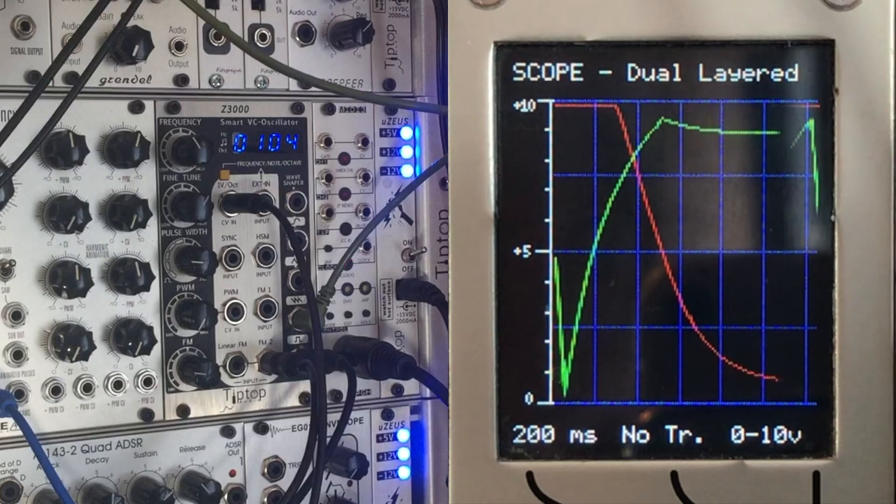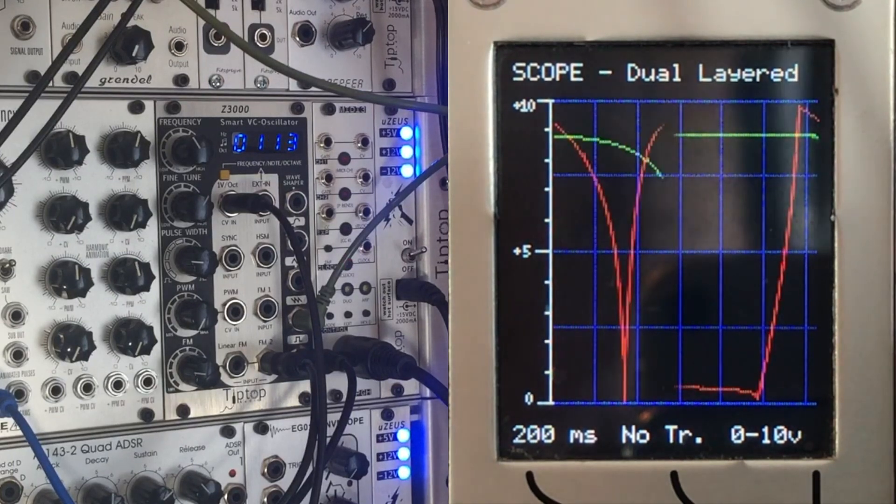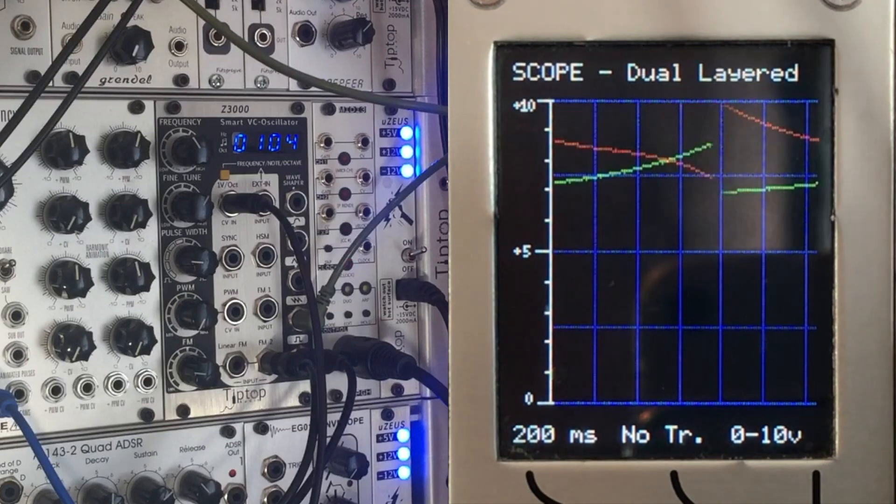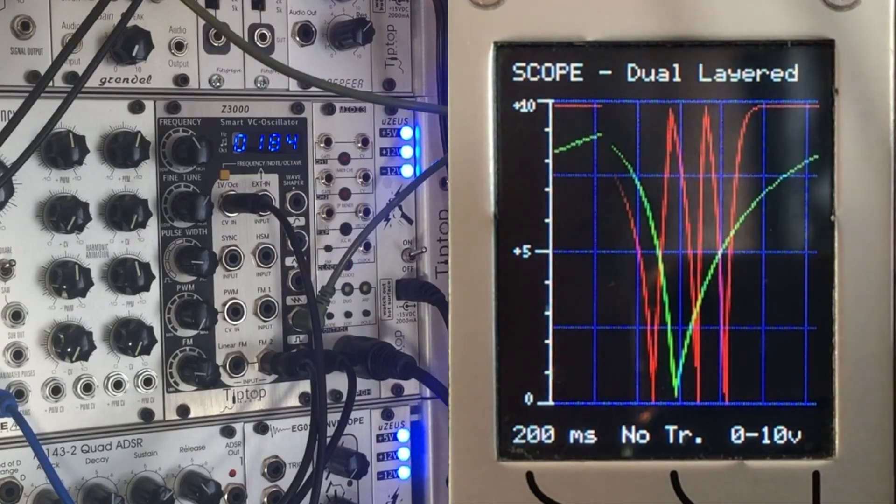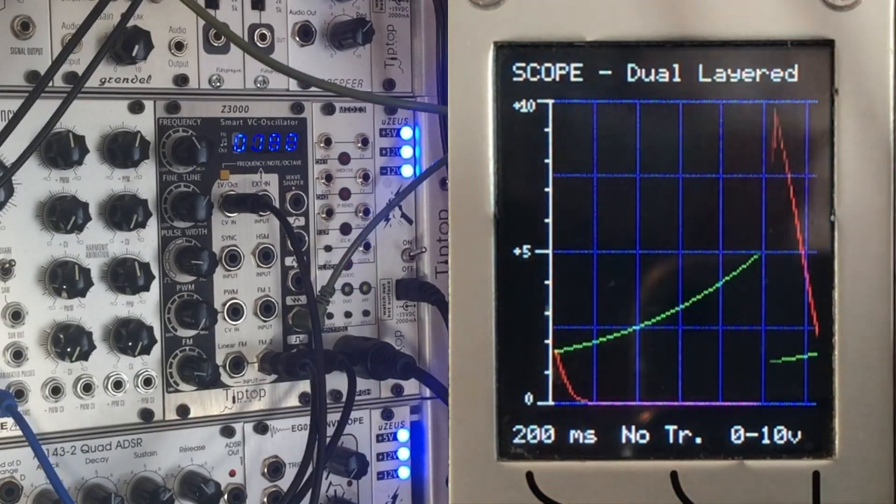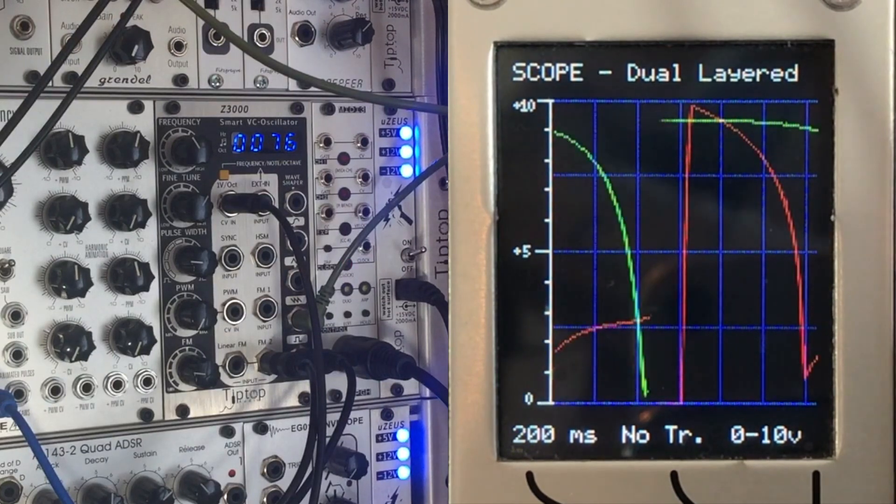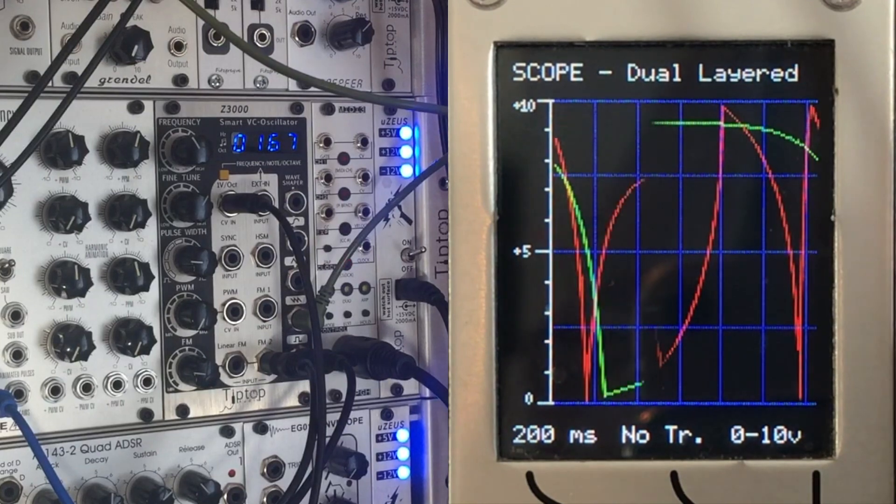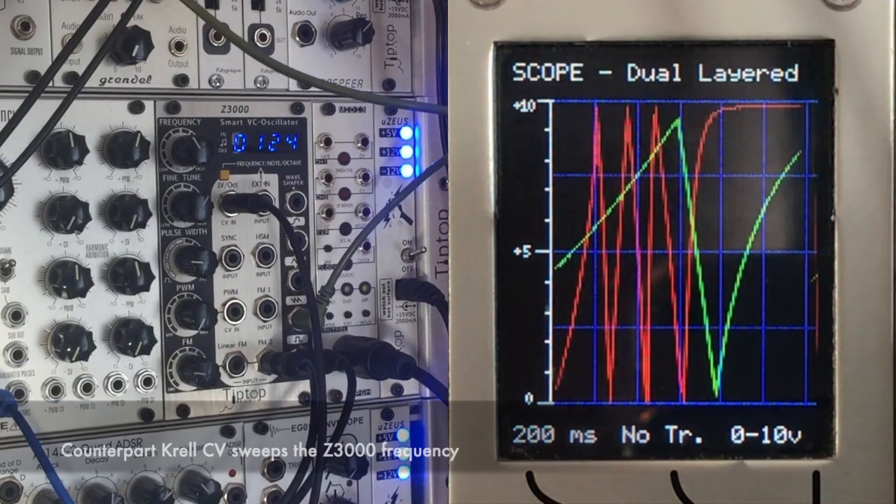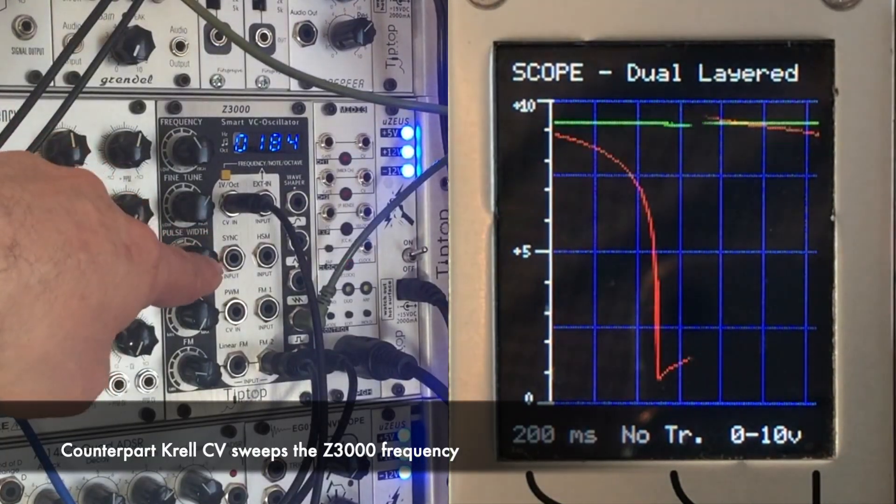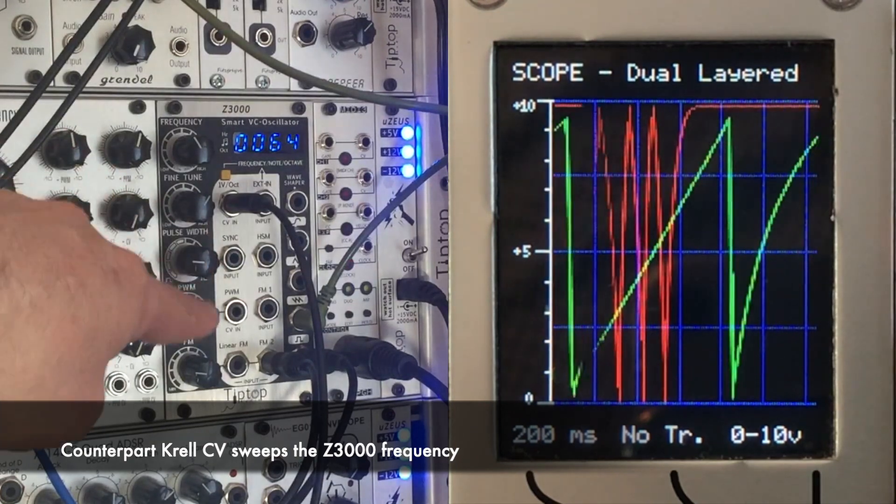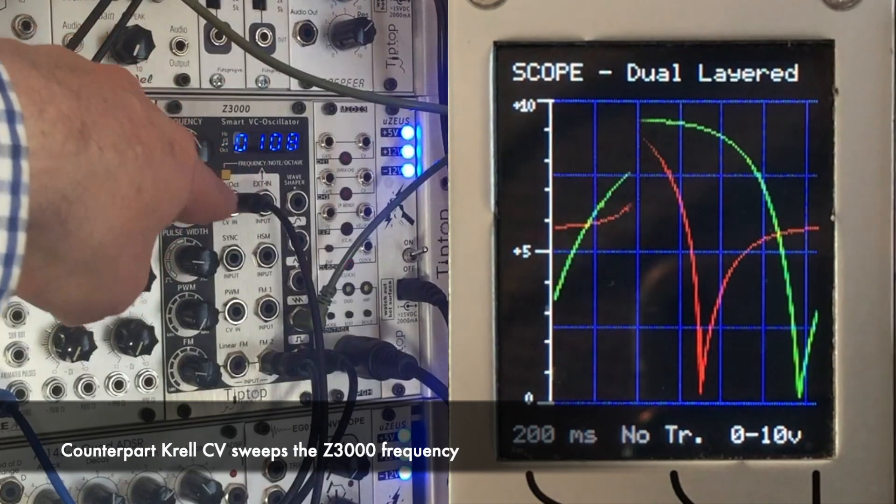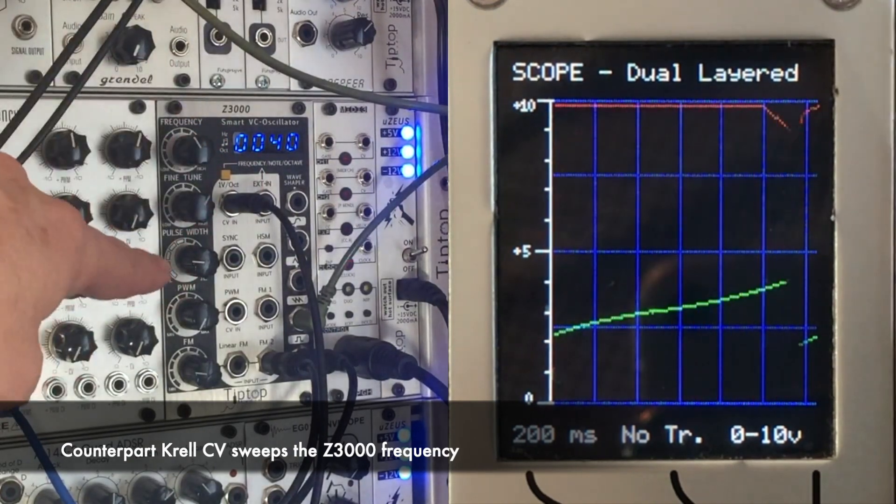Now I just wanted to go over quickly how I've created this kind of unique sounding voice. What I'm doing is I'm taking the envelope CV that comes out of MATHS channel 1 for our counterpart voice and I'm shooting it over to a Z3000 Tiptop oscillator. It's hard to see the frequency numbers on here, but if you look at them they just sort of jump up and then they jump down.